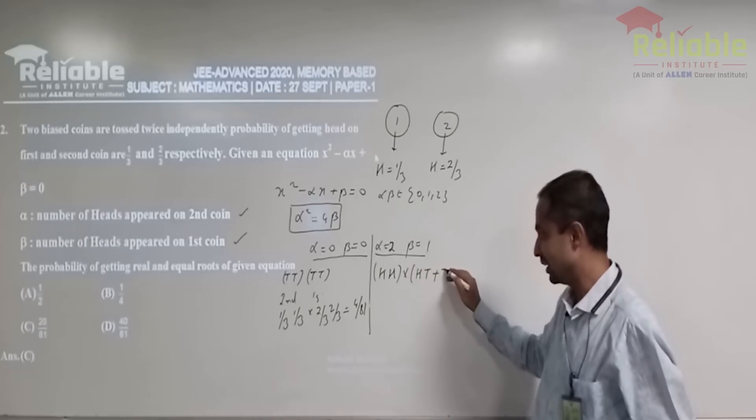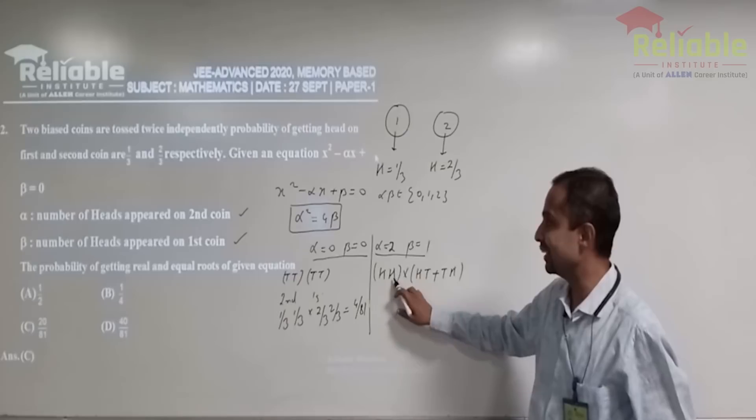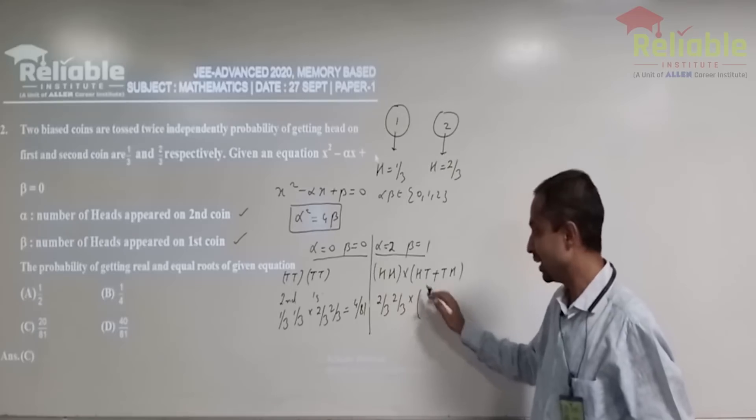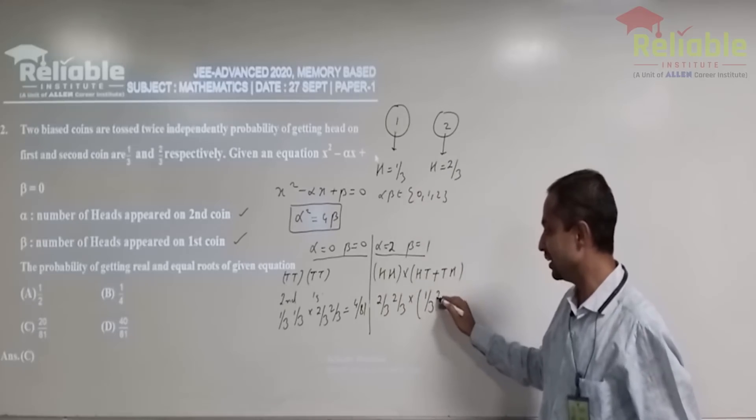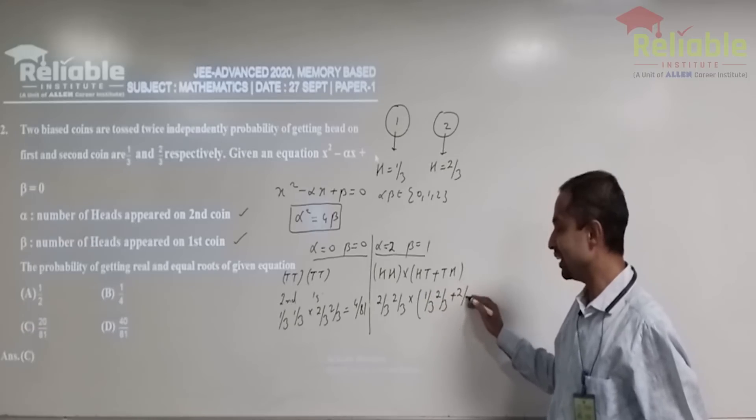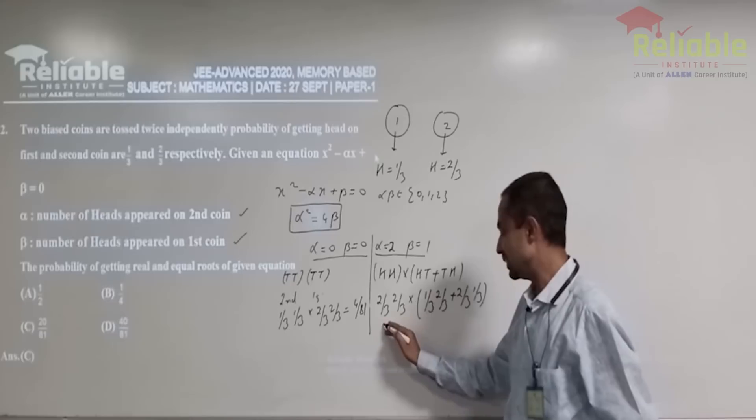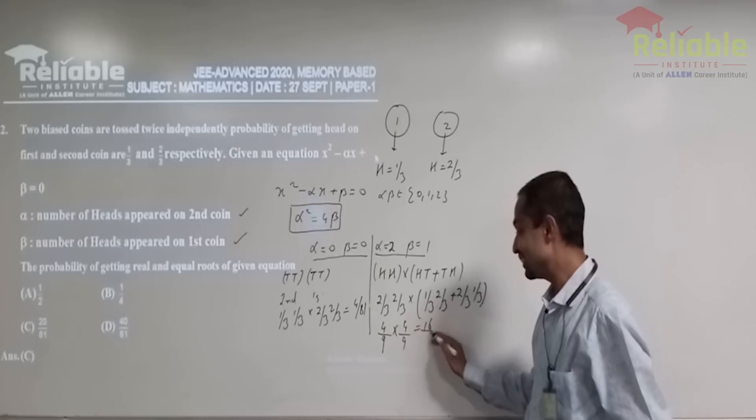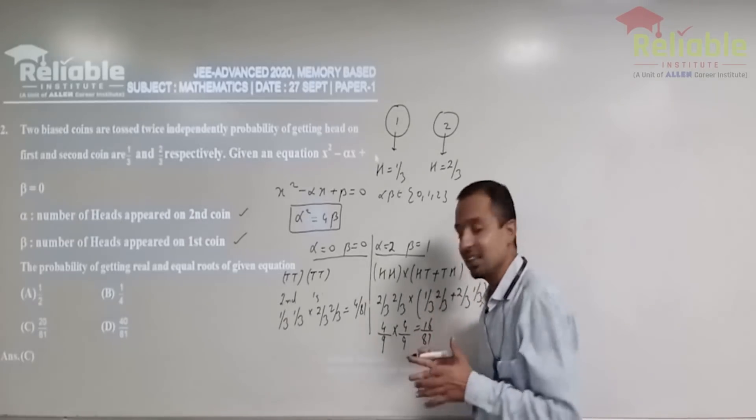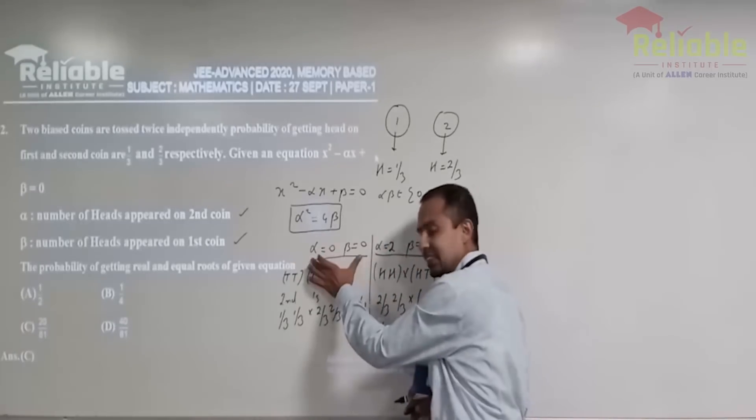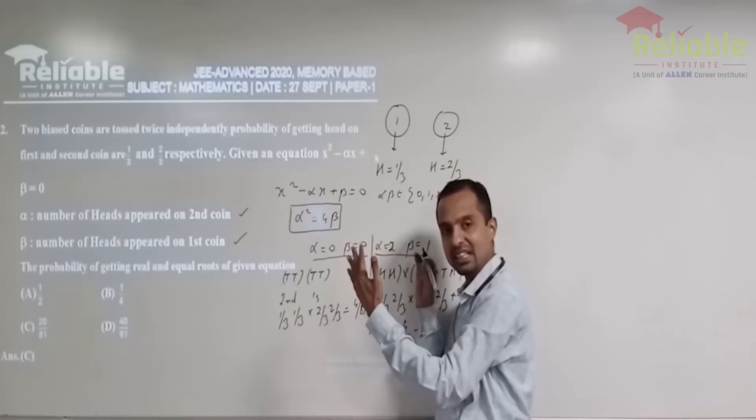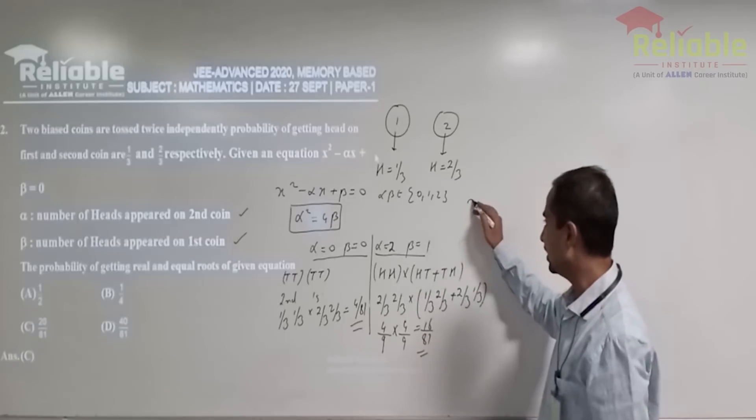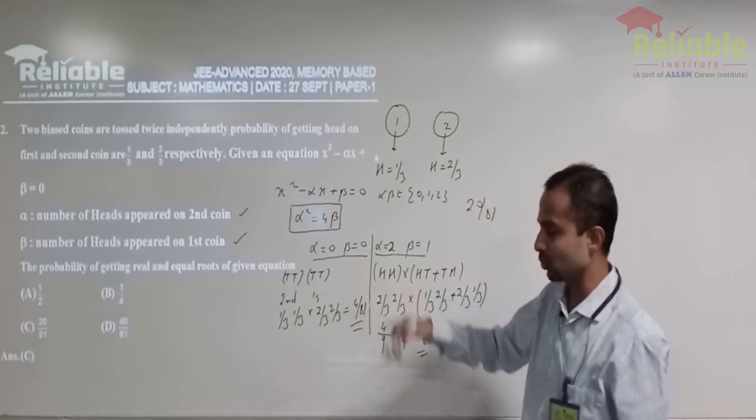Head and head on the second coin. So that is 2 by 3 into 2 by 3 into head, tail. That is 1 by 3 into 2 by 3 plus 2 by 3 into 1 by 3. So this is 4 by 9 into 4 by 9. That is 16 by 81. So in order to get equal roots, we can either consider this case or this case. So these two probabilities will get added up, not multiplied. So essentially, if you were to add these two, you're going to get 20 over 81. And that turns out to be a C choice.